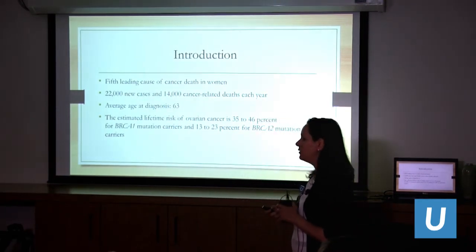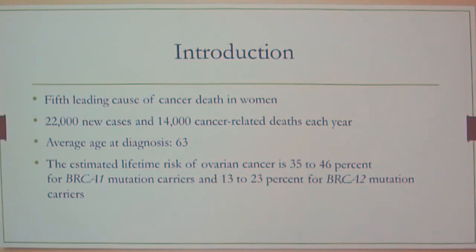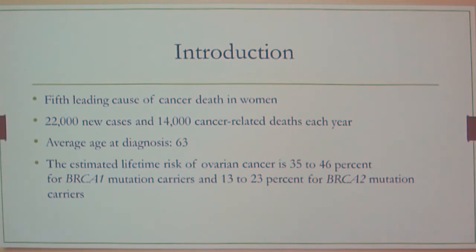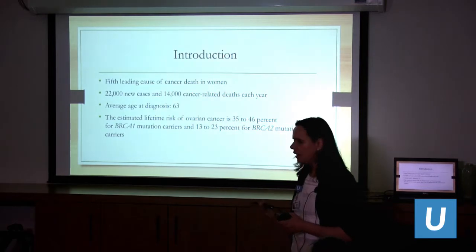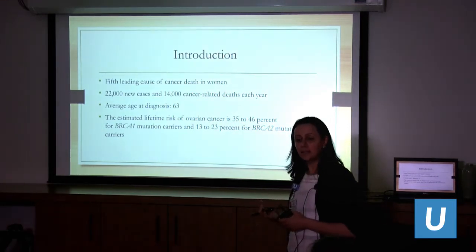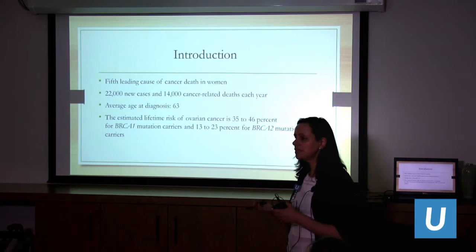Ovarian cancer is the fifth leading cause of death in women in the US, and unfortunately has poor mortality — a lot of people diagnosed end up passing away from it. The numbers are not as favorable as breast cancer or other malignancies. We have about 22,000 new cases a year and 14,000 deaths a year, which is more than half. The average age of diagnosis is around 63.